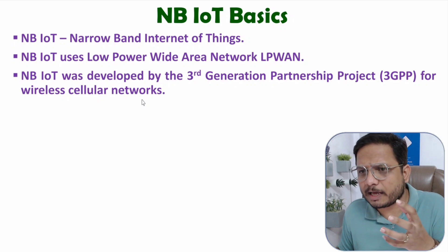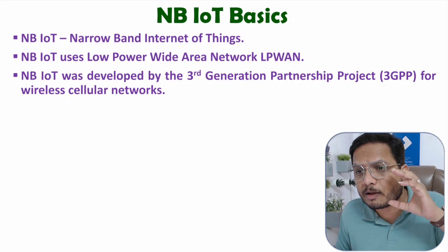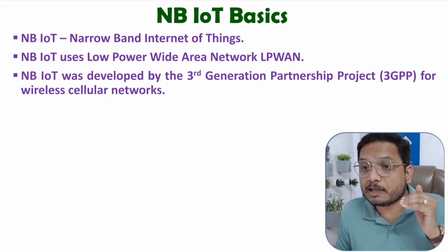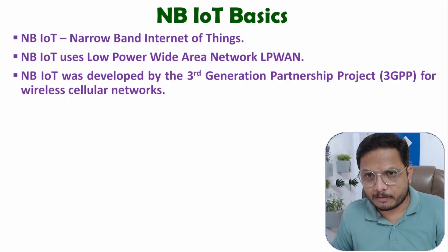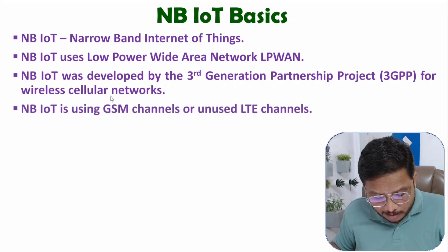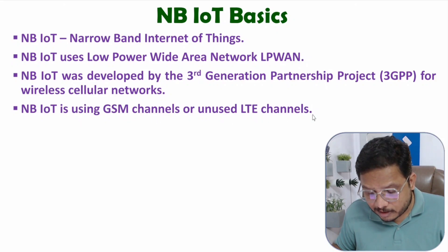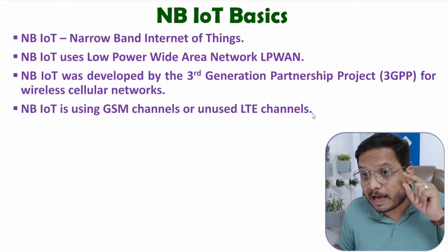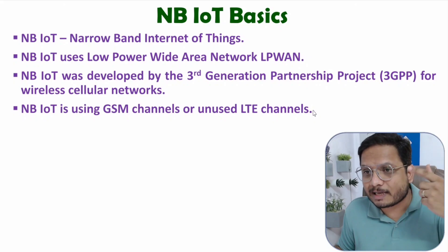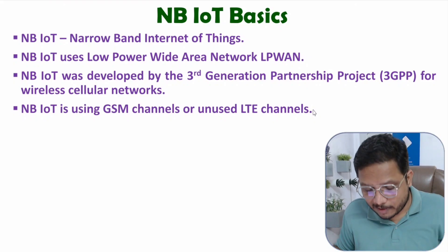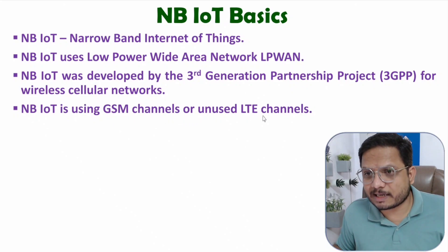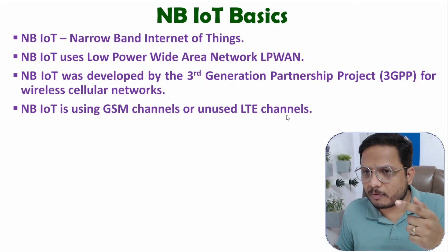In NB-IoT, devices communicate using wireless cellular networks in which GSM channels as well as unused LTE channels are occupied. So with NB-IoT, the wireless channels available come from GSM as well as unused LTE channels — how they are occupied will be explained in the working section.